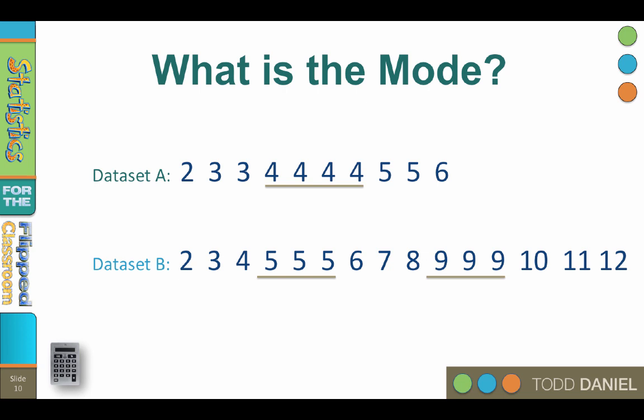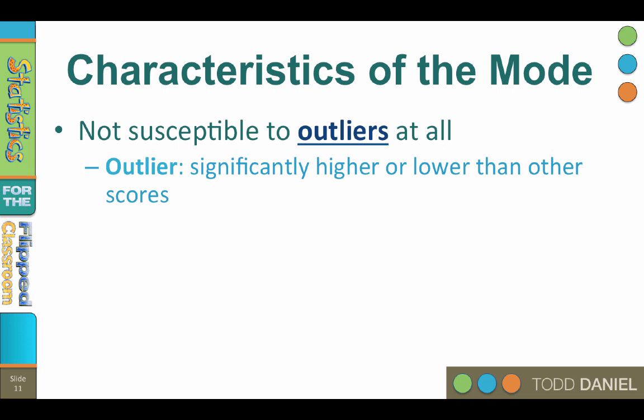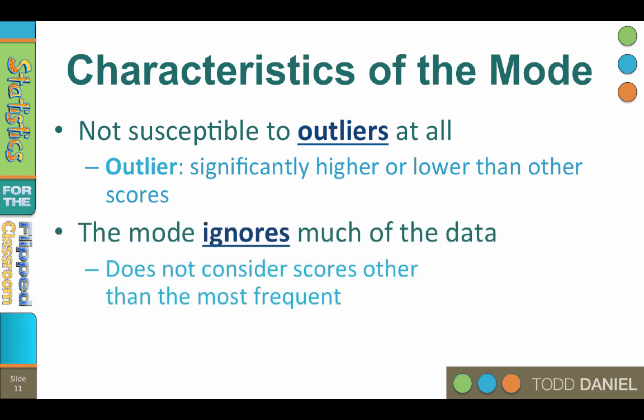The measure of central tendency that you choose to report depends upon your data, so it is important to know when you should choose the mode instead of the mean or the median. The biggest advantage of the mode is that it is not susceptible to outliers at all — any outlier, no matter how large, has absolutely no effect on the mode. Remember that an outlier is a score that is significantly higher or lower than most of the other scores. However, the advantage to the mode is also its disadvantage: the mode ignores most of the data by not considering scores other than the most frequent.